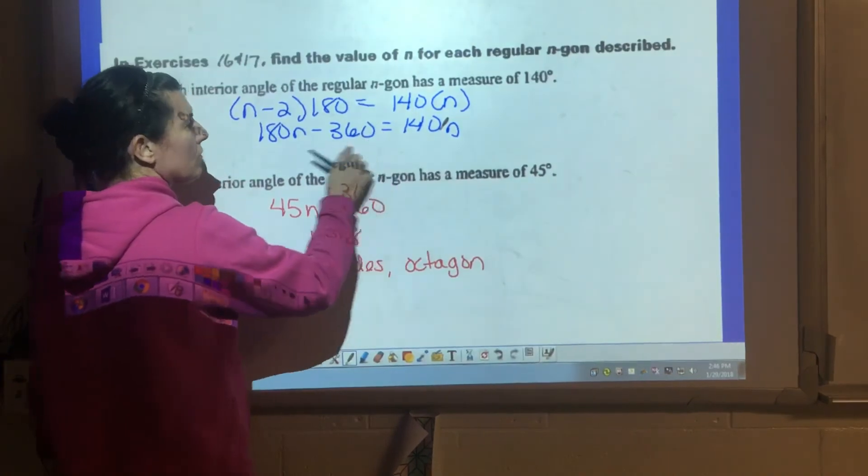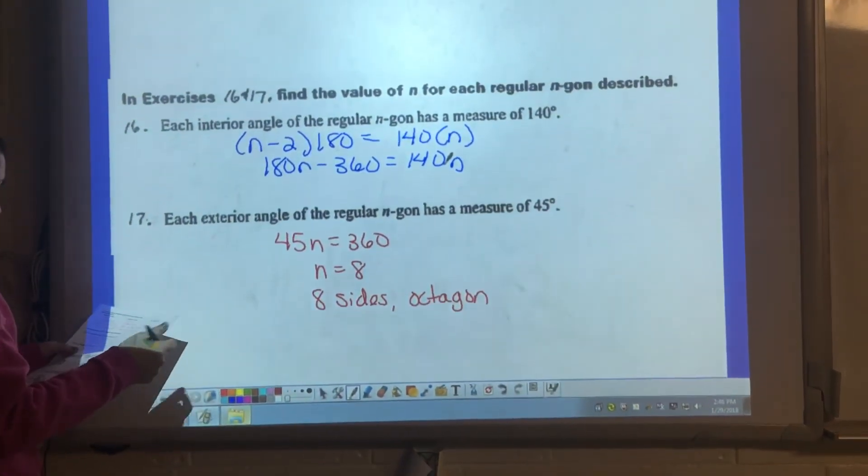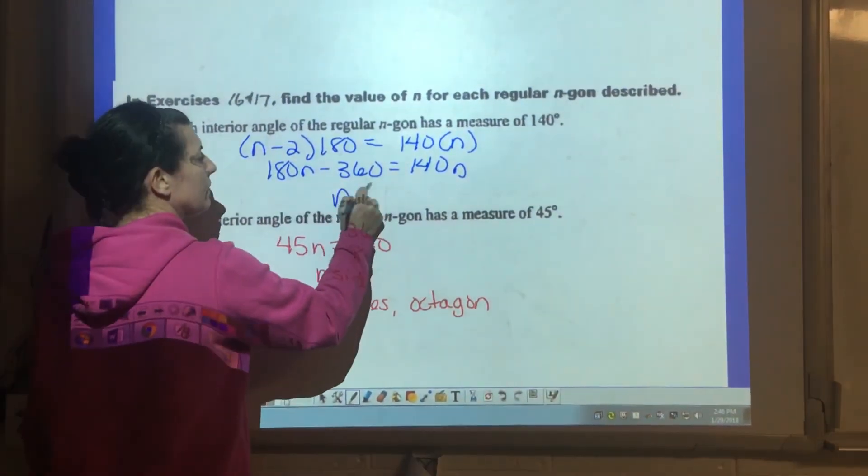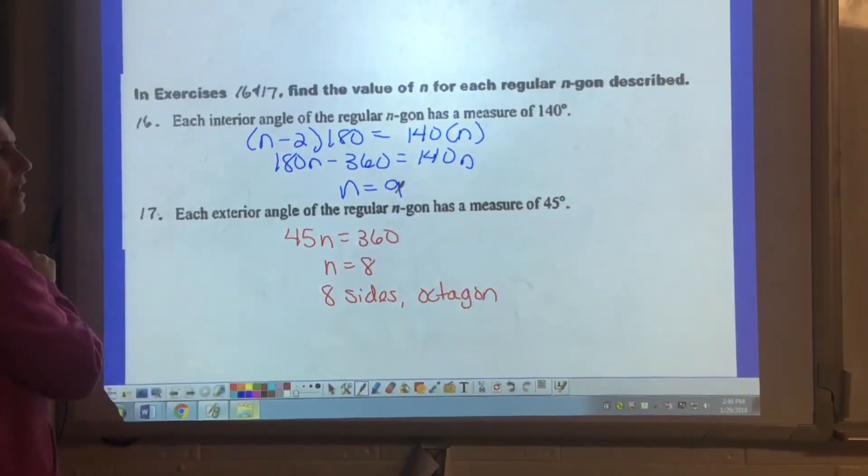Move the 180 over, divide by whatever that ends up giving me. So N is 9. So it has a 9-sided figure.